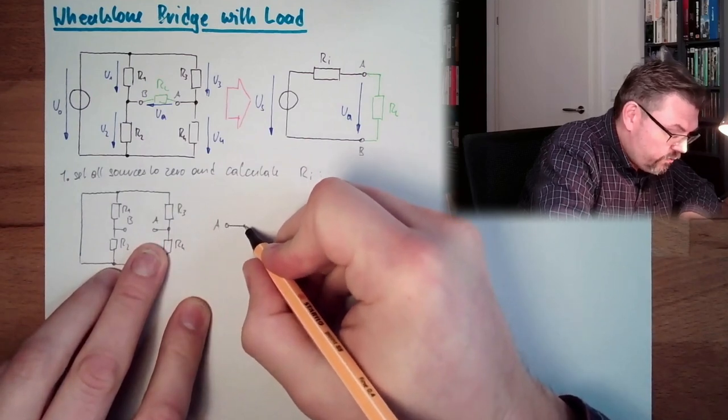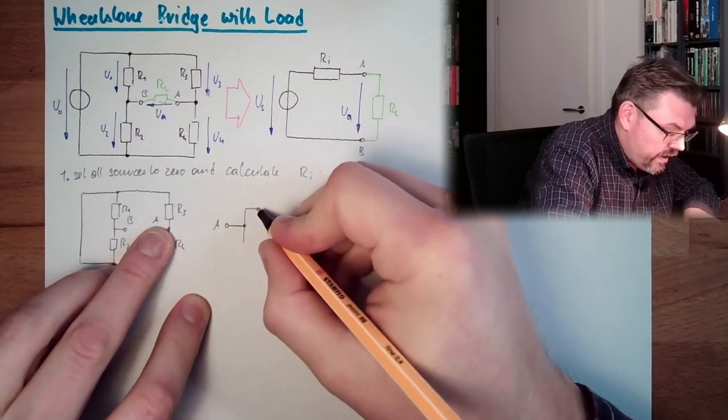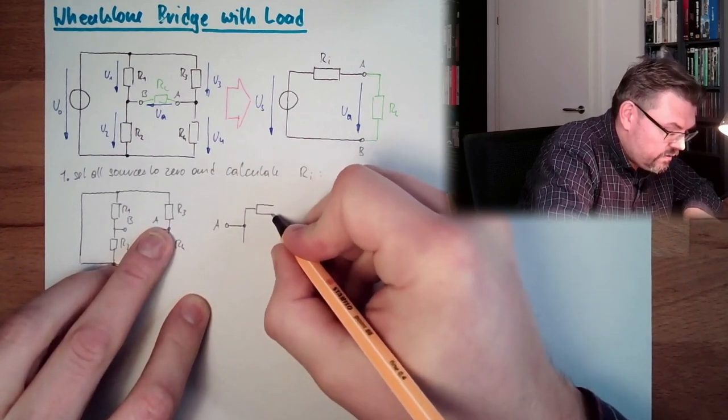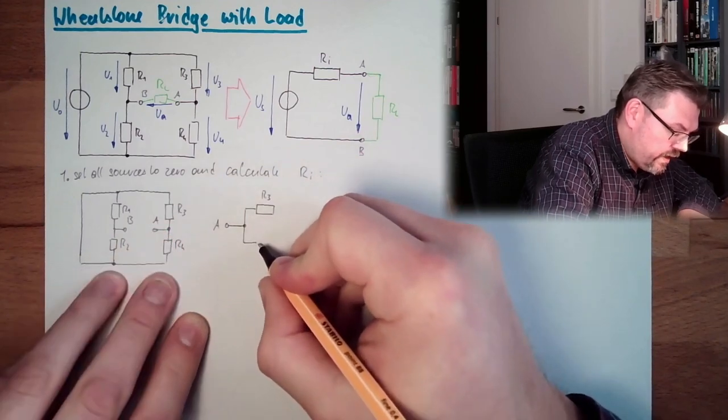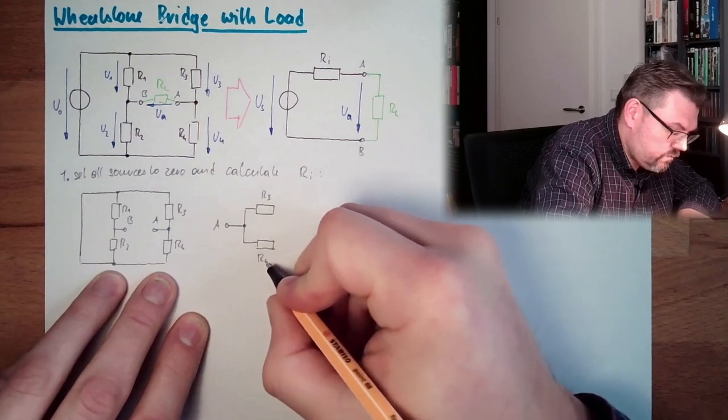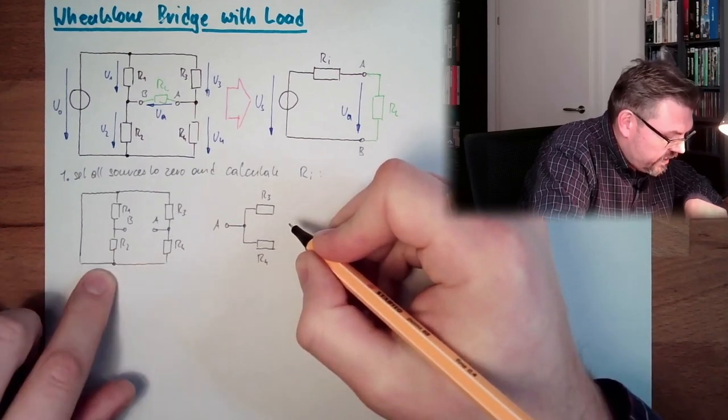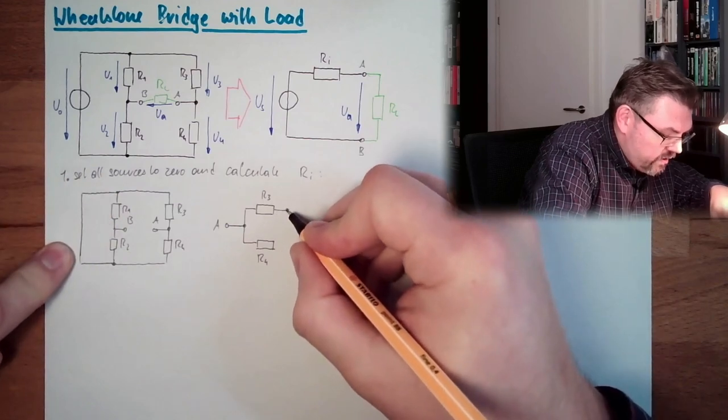So we have here A, and we're going to separate this. On one hand we have R3, on the other hand we have R4.